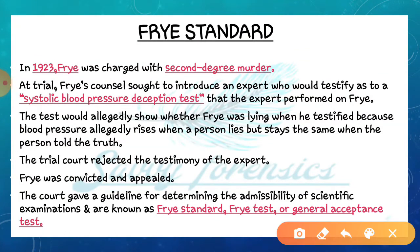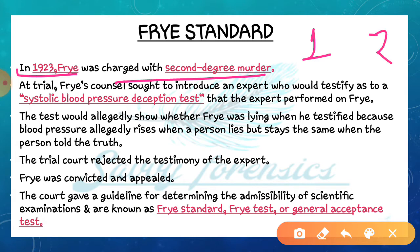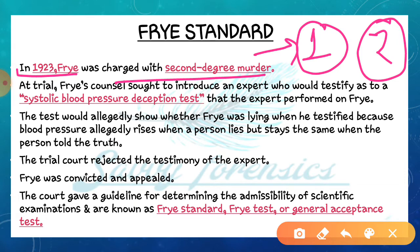In 1923، Frye کو second degree murder کے case پر charge کیا گیا تھا. US میں murders کو دو میں classify کرتے ہیں: first degree murder اور second degree murder. جتنے بھی بہت زیادہ serious cases ہوتے ہیں ان کو first degree murder میں include کیا جاتا ہے، لیکن جو cases اتنے serious نہیں ہوتے لیکن murder کے ہوتے ہیں ان کو second degree murder میں include کیا جاتا ہے.